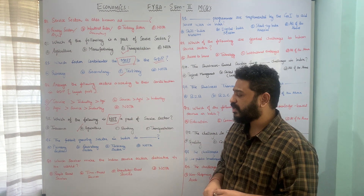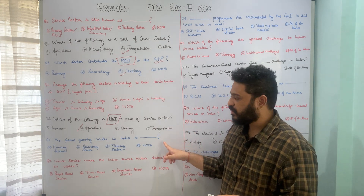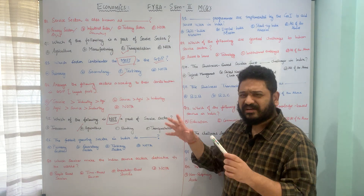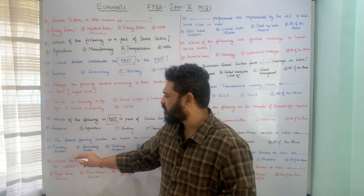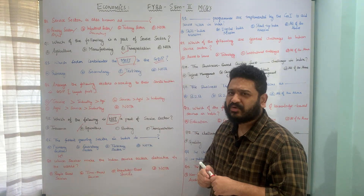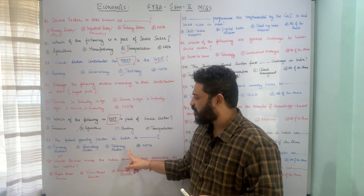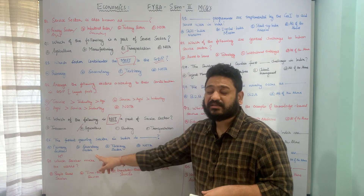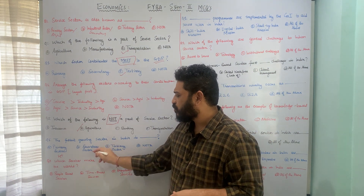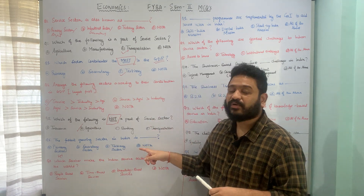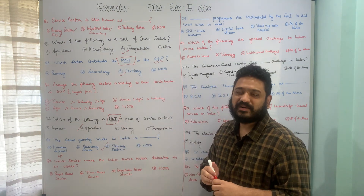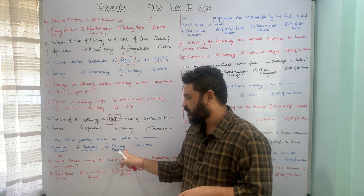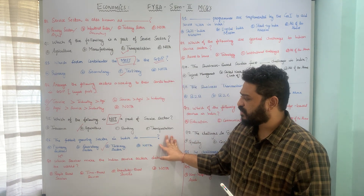The fastest growing sector in India is: A. primary sector, B. secondary sector, C. tertiary sector, or D. none of the above. Agriculture has not grown more than around 4% year on year. India jumped from the primary sector directly to the tertiary sector after liberalization, bypassing significant industrial growth. Therefore, the fastest growing sector in India is the tertiary or service sector — option C is correct.